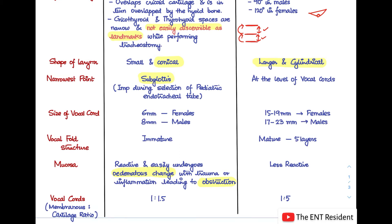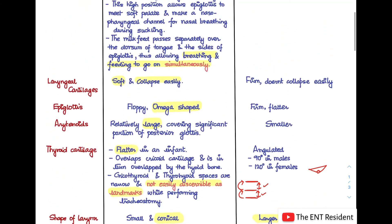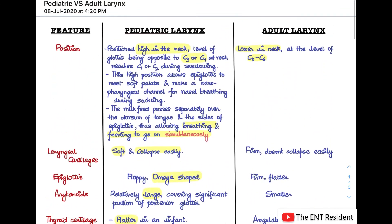The membranous to cartilaginous ratio of the vocal cords is 1:1.5 in infants, whereas in adults it is 1:5. This completes all the differences between the adult and the pediatric larynx.